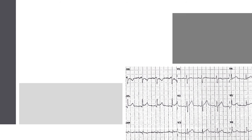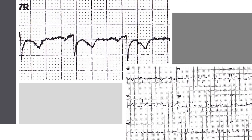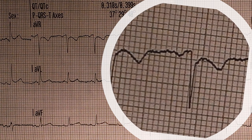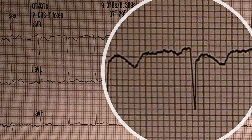Another example of an acute pericarditis ECG showing diffuse ST elevation and PR depression. Focusing on AVR again, we have the knuckle sign clearly visible. A third example also shows diffuse ST elevation, and focusing on AVR we can see a clear knuckle sign.